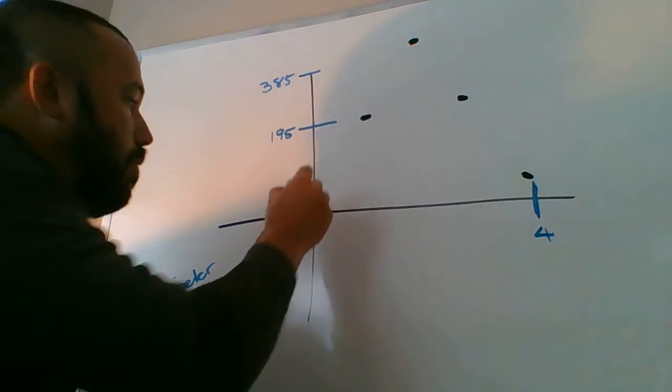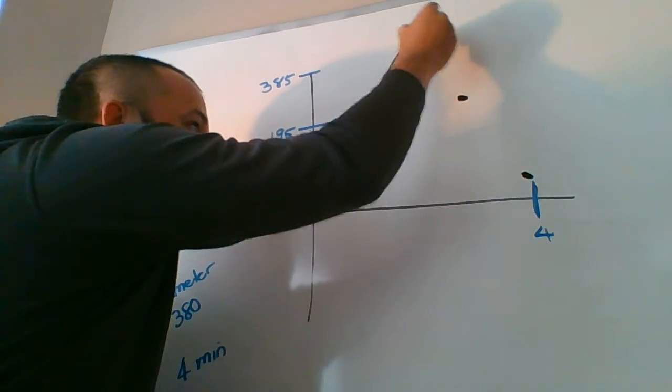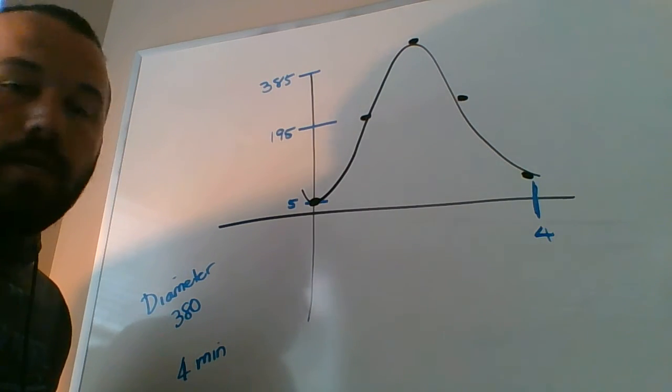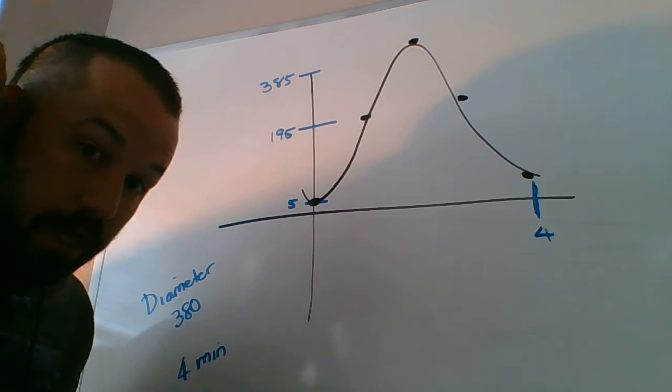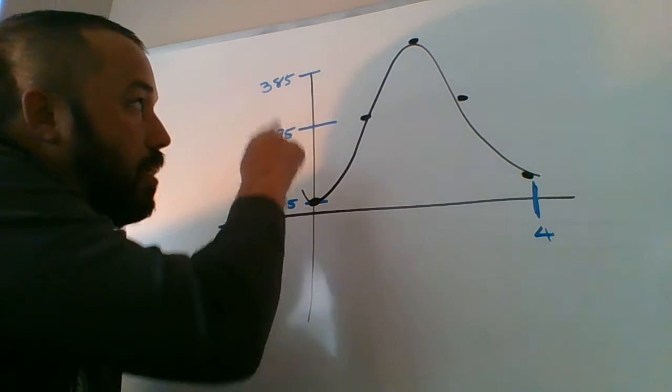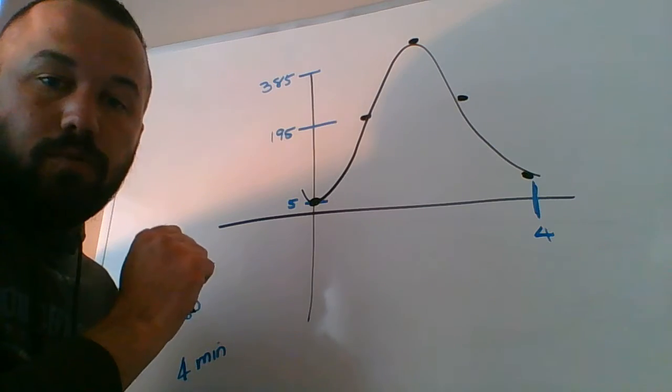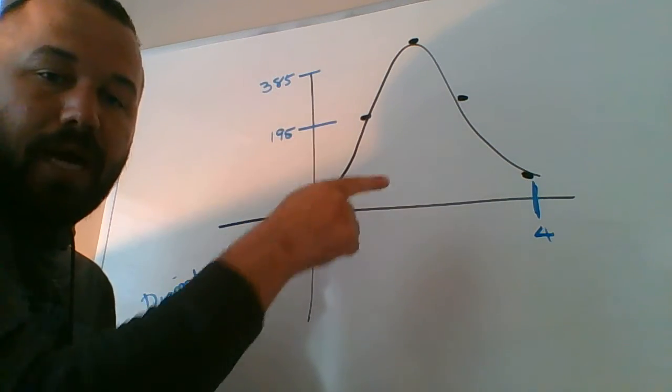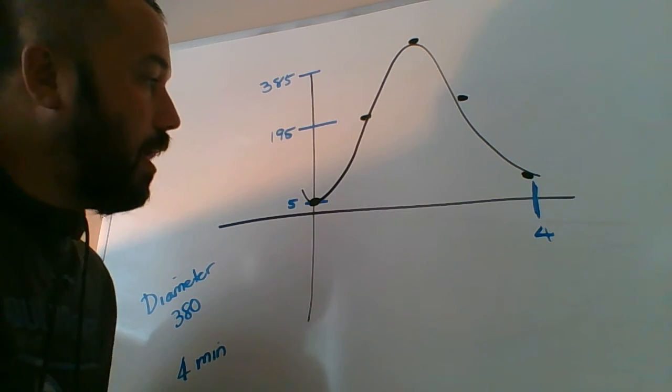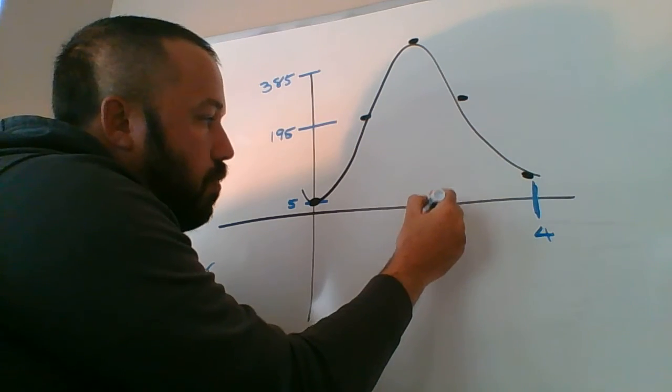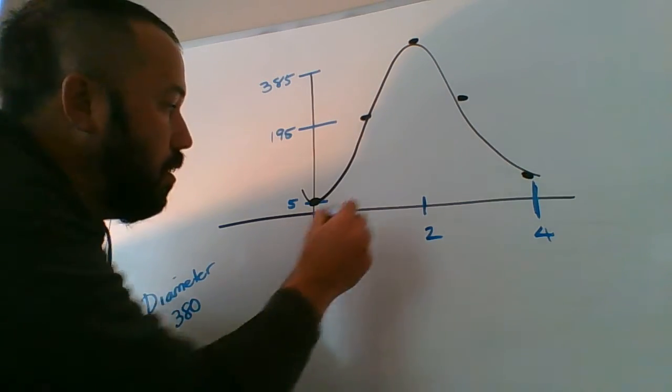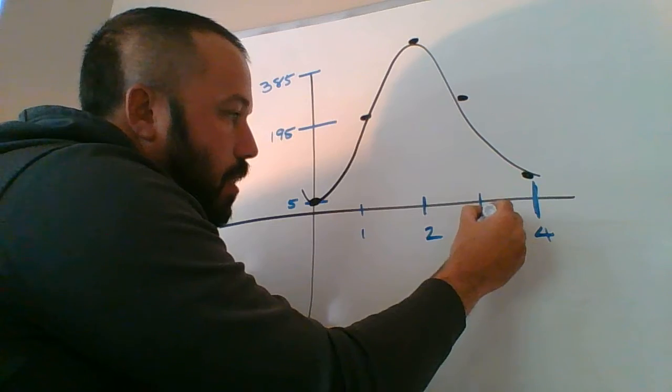You can see this thing kind of makes this graph right here, and it keeps going in this pattern over and over again. Just like sine and cosine graphs, they always go in the same pattern: bottom, middle, top, middle, bottom. If you make the scale, these are all going to be equal. So halfway around from the bottom to the top is two minutes, this would be one minute, and then this would be three minutes.